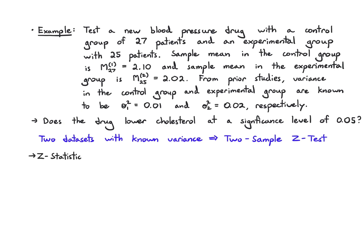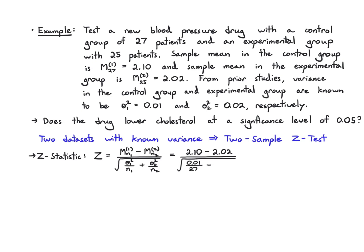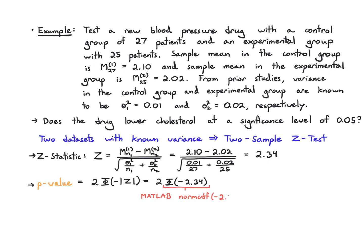We calculate the z-statistic by taking the difference of the sample means divided by the square root of the sum of each variance divided by its sample size: (2.1 minus 2.02) over the square root of (0.01/27 plus 0.02/25), giving us 2.34. For the p-value, we use 2 times phi of the negative absolute value of z — so normcdf(−2.34) in MATLAB — and two times that gives us 0.02.